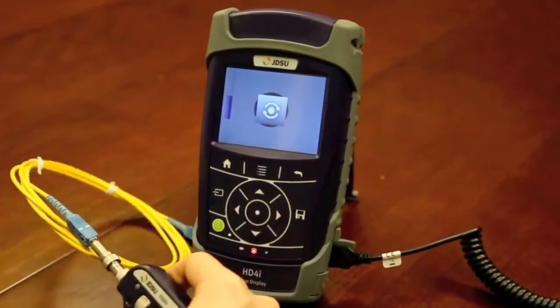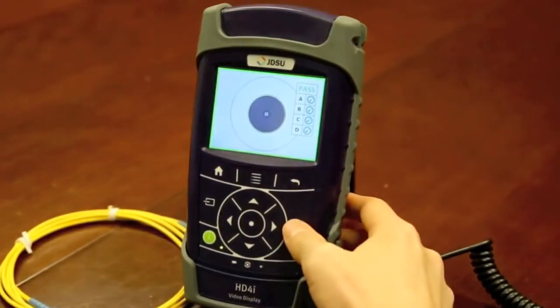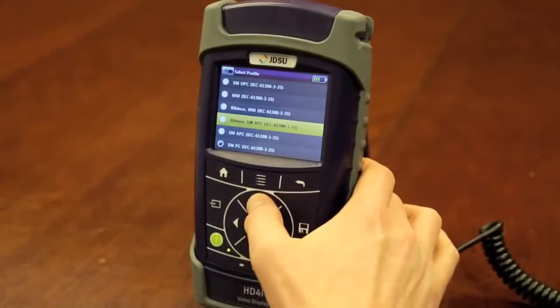It comes pre-configured with all the acceptance criteria from the IEC standard already on the device, but if your customer has different thresholds, you can configure it accordingly.